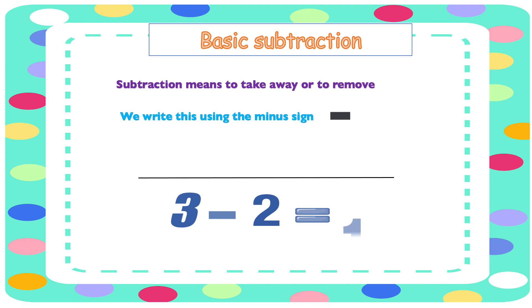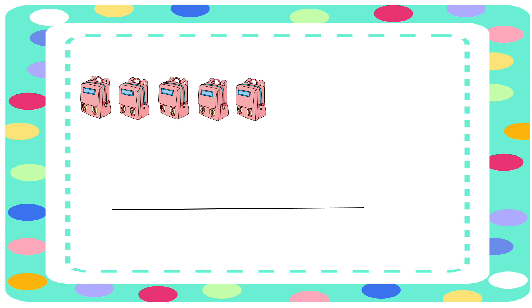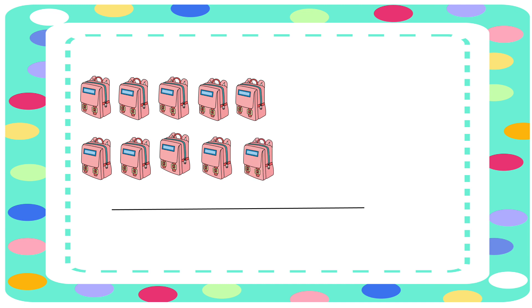Example: 3 minus 2 equals 1. Now we're going to look at some examples. I have some school bags. Let's find out how many there are: 1, 2, 3, 4, 5, 6, 7, 8, 9, and 10.